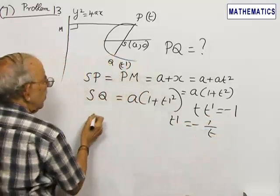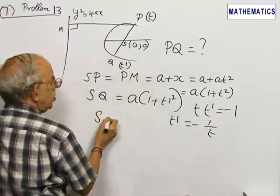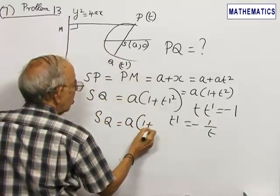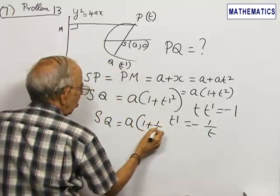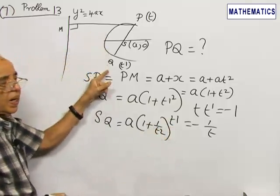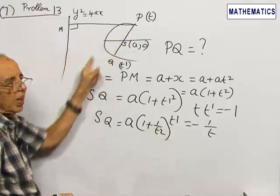Therefore, SQ will become a into 1 plus 1 by t squared. I want the length of the focal chord.